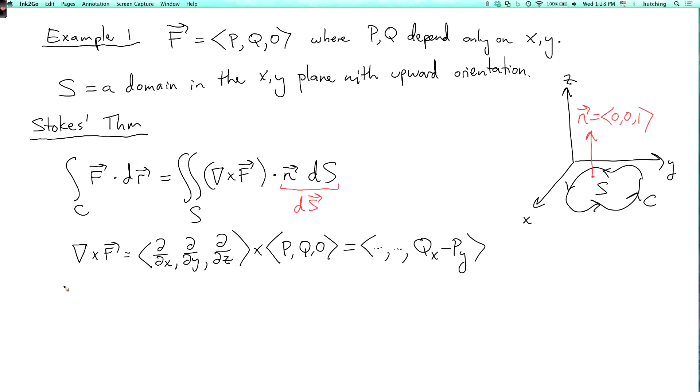So, we get that the double integral over s of the curl of f dot n ds is equal to the double integral over s of q x minus p y. And this ds, since this is just a surface on the plane, this ds without the arrow on it, that's just the element of area in the plane, as before.